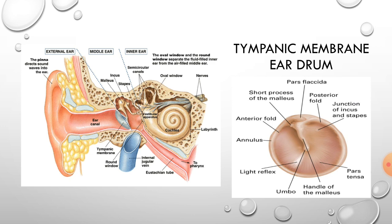Now we study the tympanic membrane, which is very important. The tympanic membrane is approximately one centimeter in diameter — a thin, oval, semi-transparent membrane at the medial end of the external acoustic meatus. It forms a partition between the external ear and the tympanic cavity of the middle ear. It is covered with thin skin externally and mucous membrane of the middle ear internally.